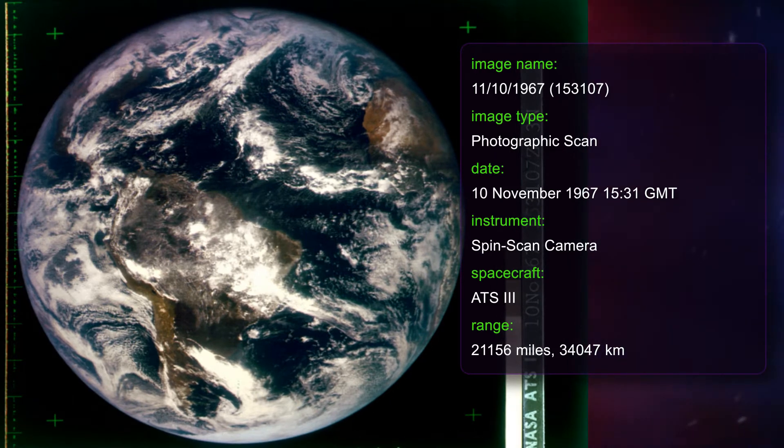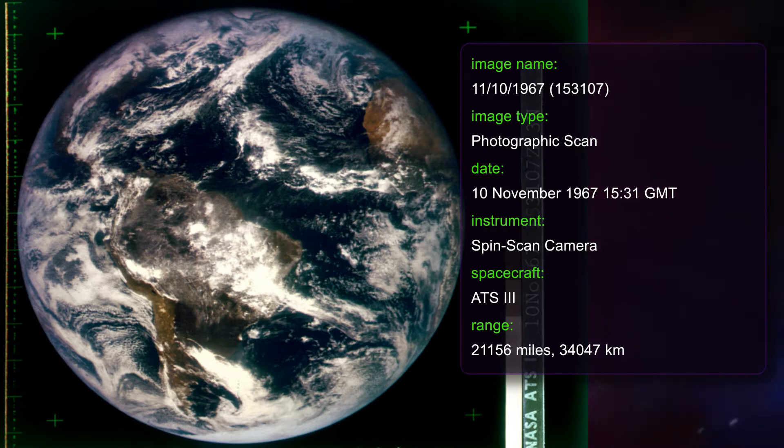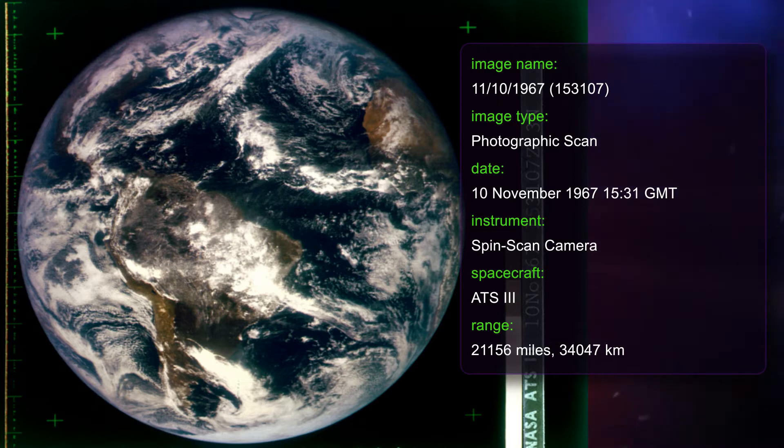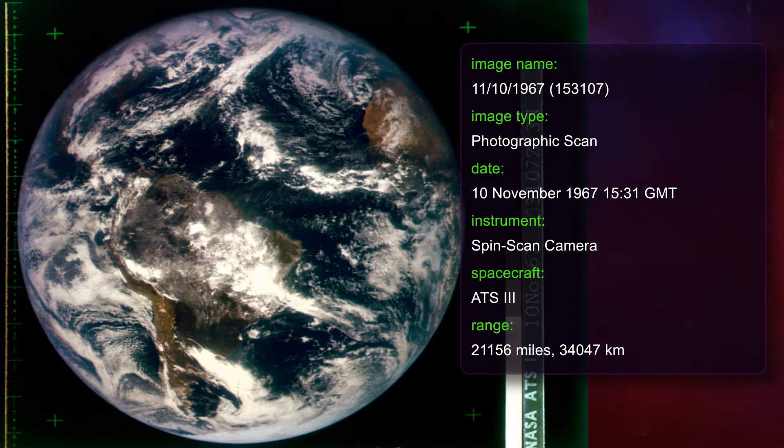The satellite has served as a communications link for rescue operations including the 1985 Mexico City earthquake and the 1980 eruption of Mount St. Helens. The image was taken using a device called the spin scan camera. This used the spin of the satellite to scan a small strip of the Earth with each rotation. By tilting the camera slightly for the next rotation, a 1200 line image of the Earth could be created in about 20 minutes.